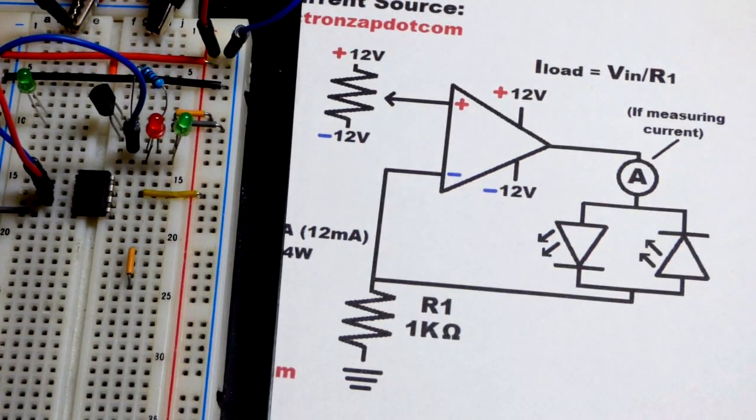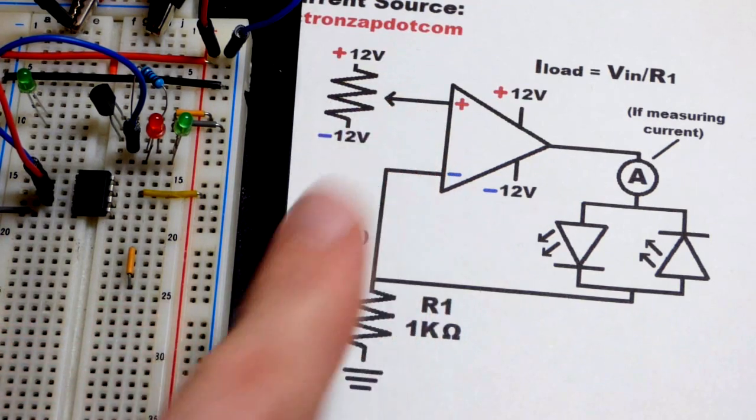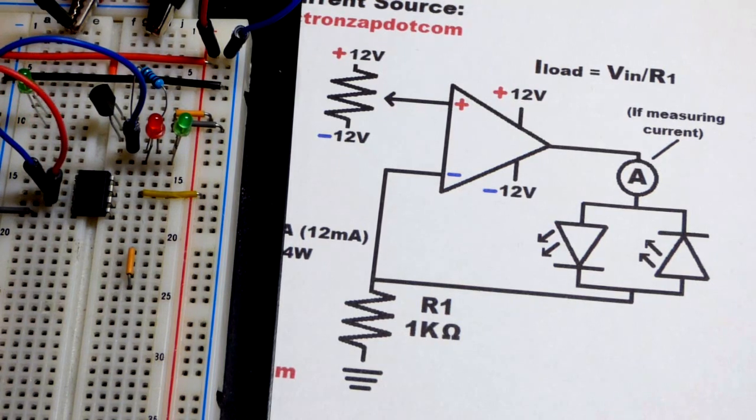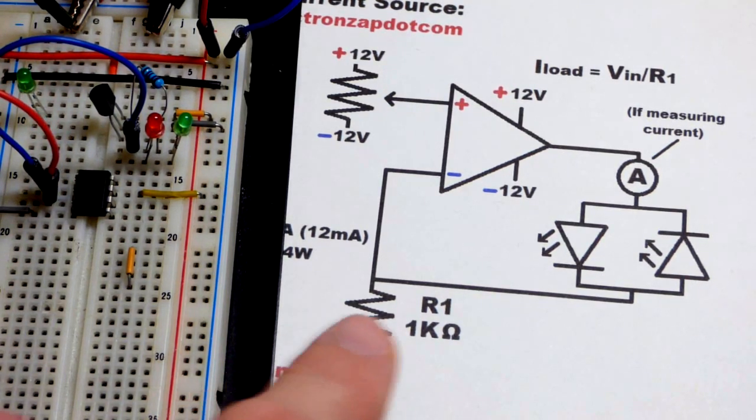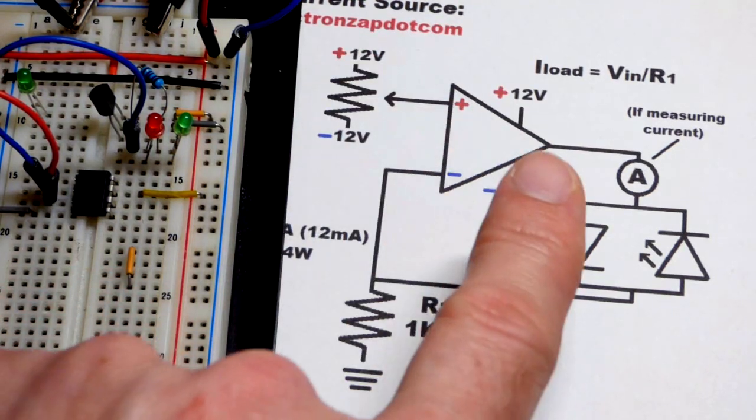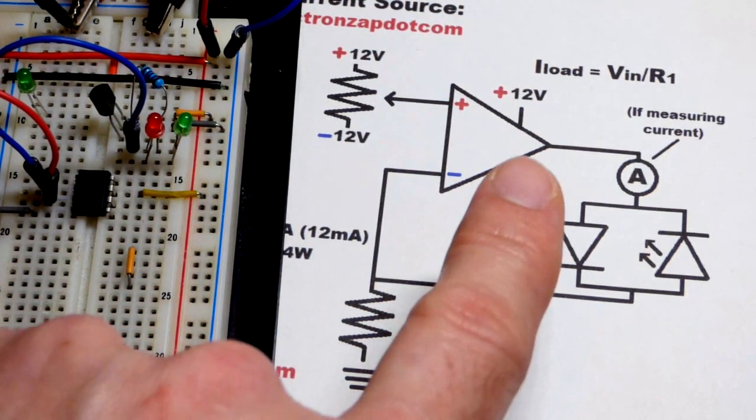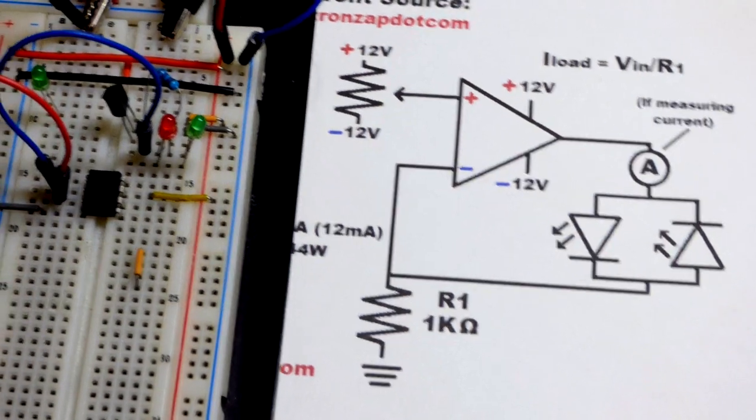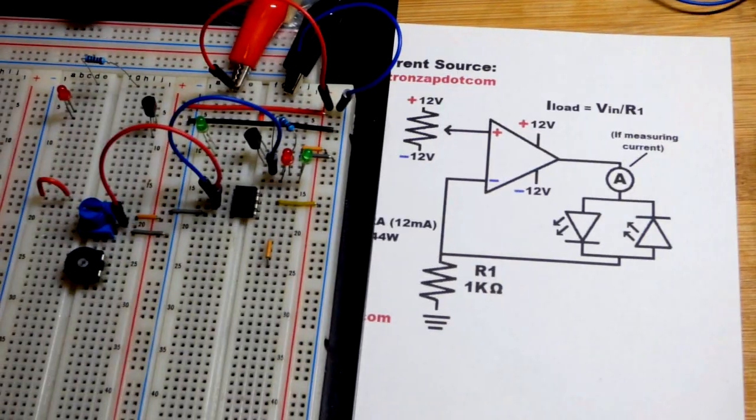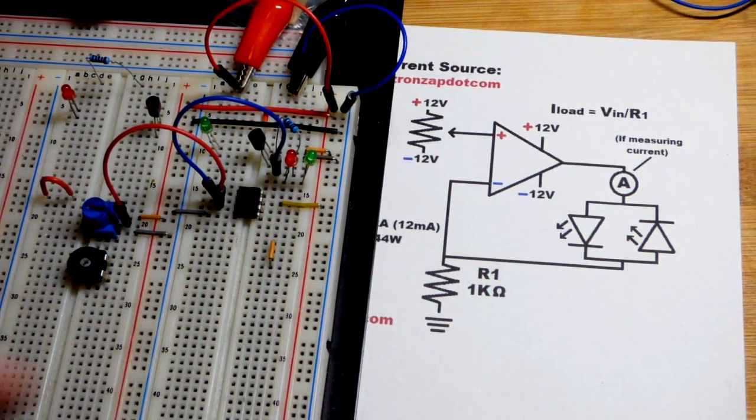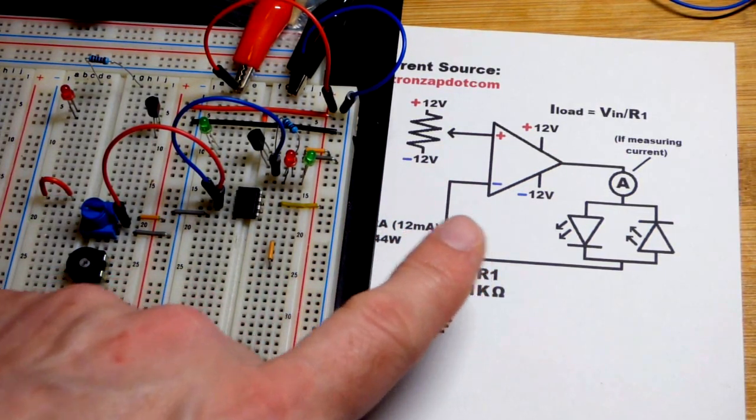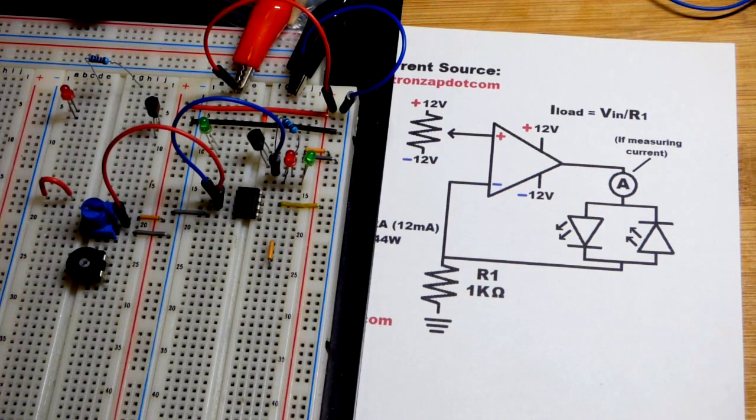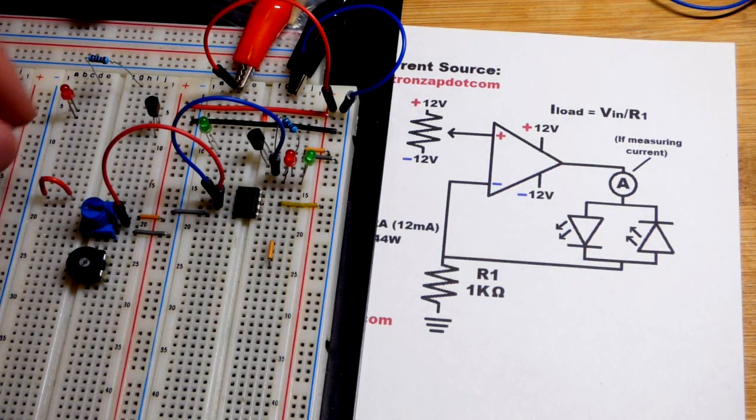That's going to go to a trim pot where we can adjust the voltage anywhere up to positive 12 volts or down to negative 12 volts. Another thing to remember is that the output does not go all the way up to the positive rail or all the way down to the negative rail. It's about two volts away from both of those rails. So we are somewhat limited on our range, but it's no big deal. This is a demonstration circuit.